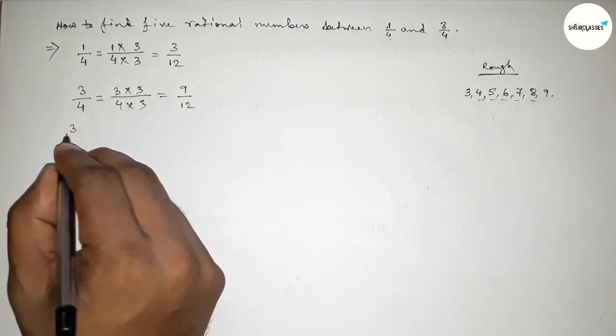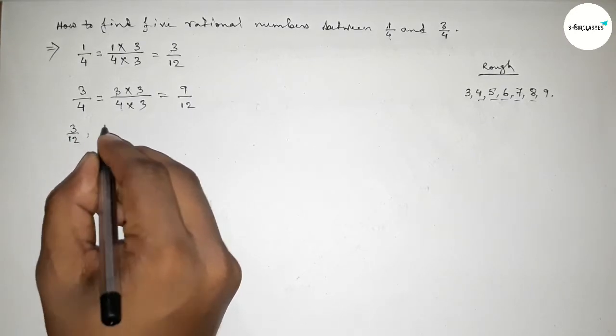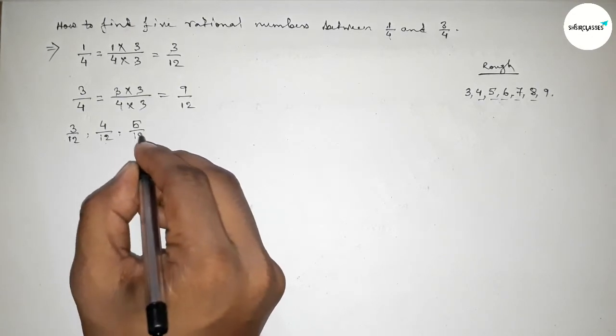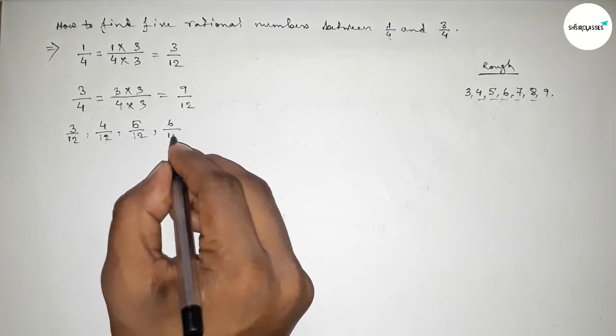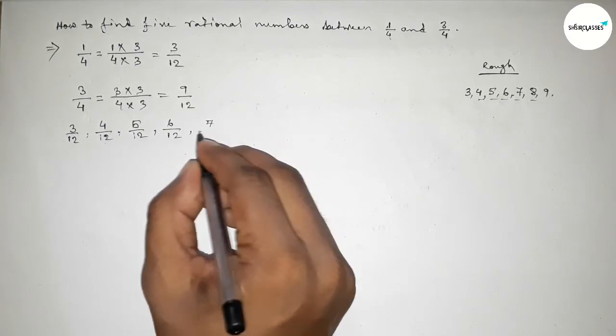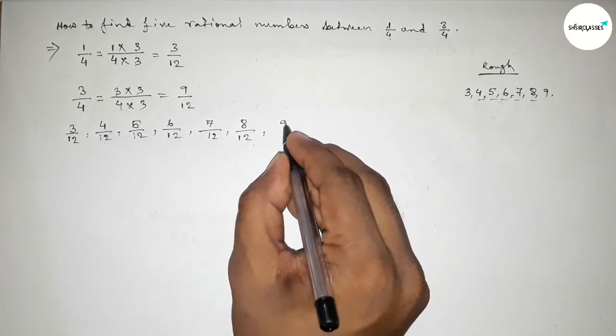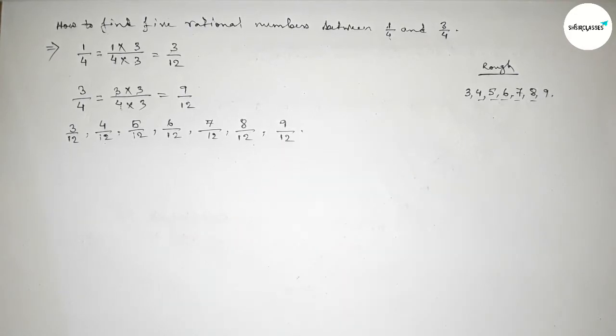Now write down all the rational numbers here. First one: 3 over 12, then 4 over 12, then 5 over 12, 6 over 12, 7 over 12, 8 over 12, and last one 9 over 12. Among these, these are the required 5 rational numbers between 1 over 4 and 3 over 4.